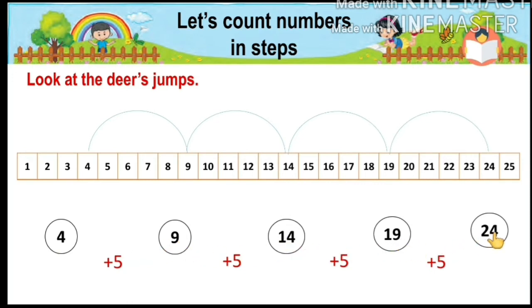The deer jumped starting from number four. All these numbers are in steps of five.